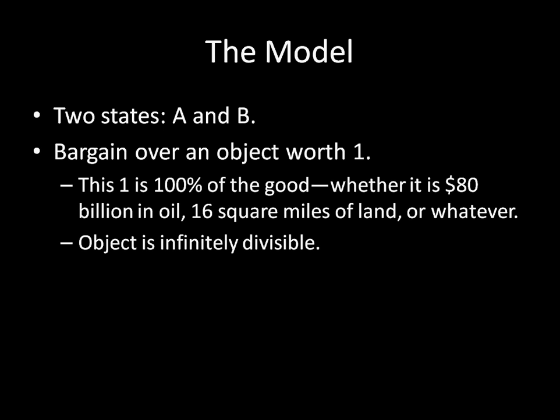And the object is infinitely divisible, which means the sides can come to an arrangement on any division of 100%. So it could be that the sides split 50-50, or one gets two-thirds and the other gets one-third, or one gets 0.111 and the other gets 0.889. It doesn't matter, as long as the object is infinitely divisible — that's the assumption we're making so far.